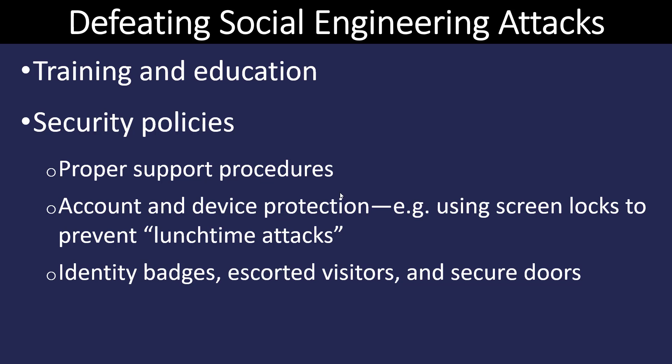If we want to mitigate or defeat social engineering attacks, the first thing we need to do is training and education with our users — making sure that they're aware, and making people who are at the company prove who they are. We need to make sure our entrance policy is such that people can't just walk in and look around, and that we have proper security procedures in place. We can also use screen locks on computers, ensure everyone has an identity badge, that they're escorted, and that they're not allowed into unsecured places. Security doors can help with that as well.